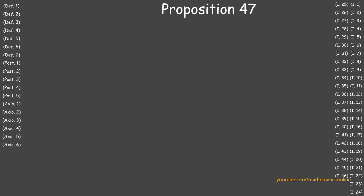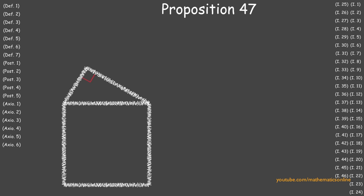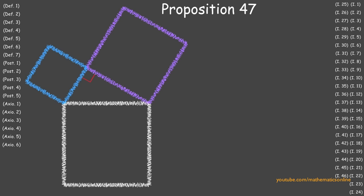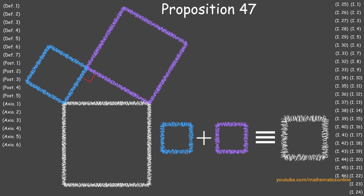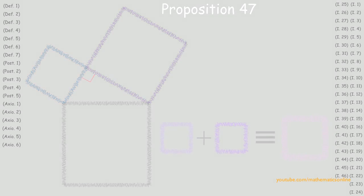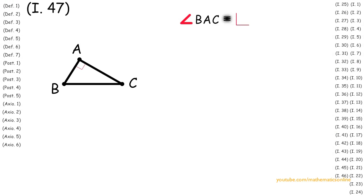So now we've finally arrived at Proposition 47, Euclid's proof of the Pythagorean Theorem. In Proposition 47, we prove that given any right triangle, the square opposite the right angle is always congruent to the sum of the other two squares. To begin this proof, we are given triangle ABC with angle BAC congruent to a right angle.